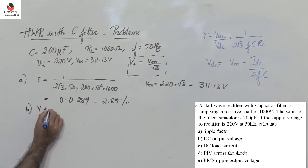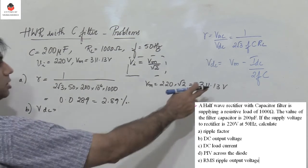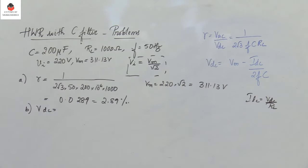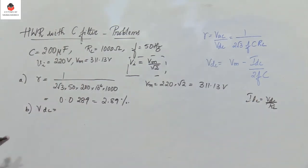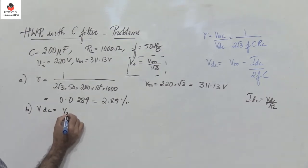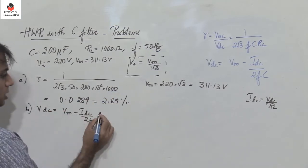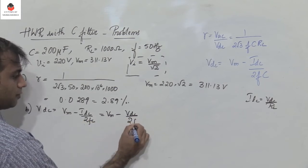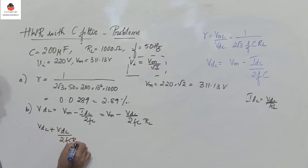Next, find VDC. VDC is given by the expression Vm minus IDC divided by 2FC. Now IDC is nothing but VDC divided by RL, because we do not know the value of IDC directly. So I substitute IDC equals VDC by RL, giving VDC equals Vm minus VDC divided by 2FC·RL. Now let me take this term to the left-hand side.